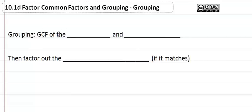In grouping, we take the GCF out of both the left and right. In other words, we split this into two groups.